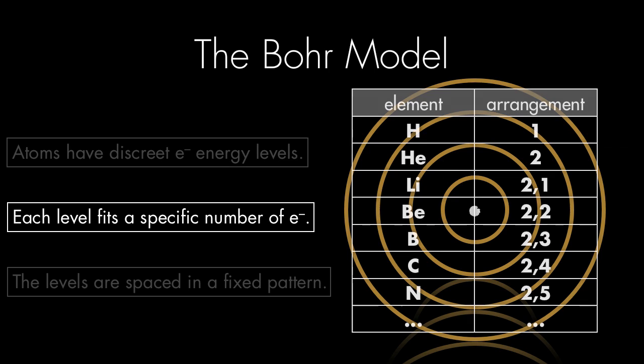So these are the electron arrangements of some of the elements early in the periodic table. Helium has two electrons in the innermost shell, while beryllium has two more electrons in the second shell, and so on and so forth.